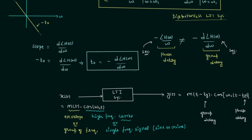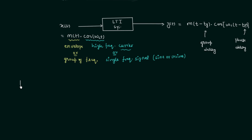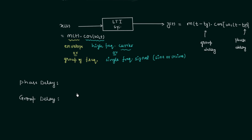Before ending this lecture I will formally define the phase delay and the group delay. Phase delay is the delay provided by the system to the single-frequency or monotone part of the input — that is, the cos(ωct) part. Group delay is the delay provided to the envelope, or group of frequencies, part of the input. Phase delay is represented by Tp and group delay is represented by Tg.